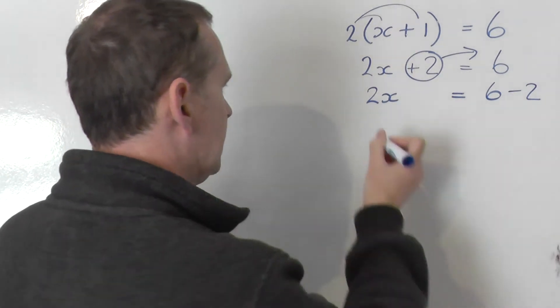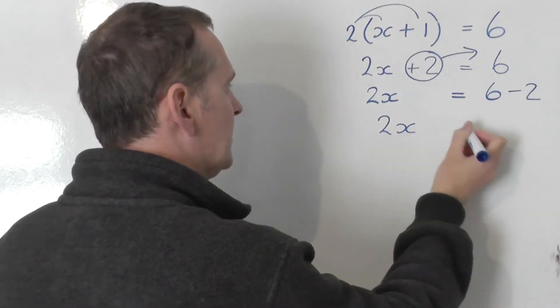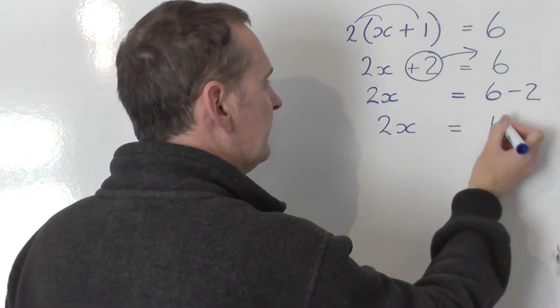Now let's tidy up the right-hand side. So on the left we've got 2x, and on the right we've got 6 take away 2, which is 4.